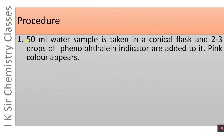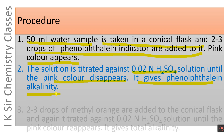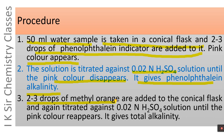Procedure: 50 ml of the water sample is taken in a conical flask and 2 to 3 drops of phenolphthalein indicator are added to it, turning the solution pink. The solution is titrated against 0.02 N H2SO4 solution until the pink color disappears, giving the phenolphthalein alkalinity. Then 2 to 3 drops of methyl orange are added to the conical flask and again titrated against 0.02 N H2SO4 solution until the color changes, giving the total alkalinity.